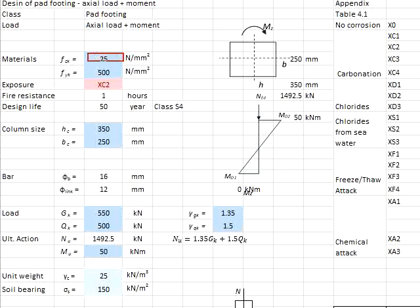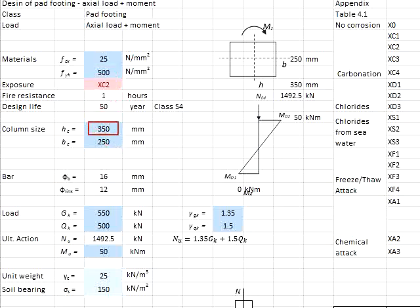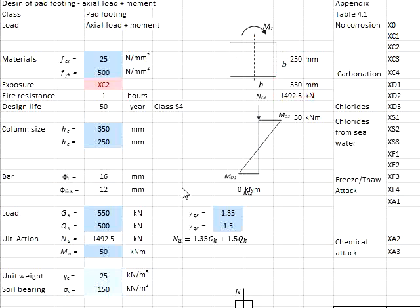Concrete grade 25, steel grade 500, exposure class XC2, fire resistance 1 hour, design life 50 years, column size 350 times 250 mm — where 350 mm is in the direction of the moment and 250 mm is in the direction without moment. The proposed bar size is 16 mm.